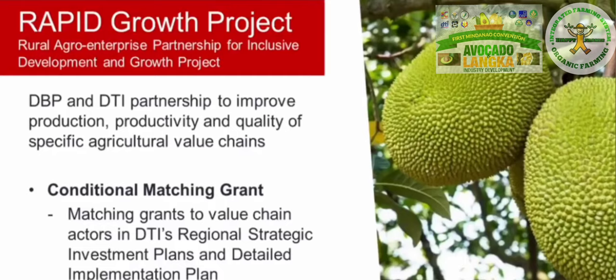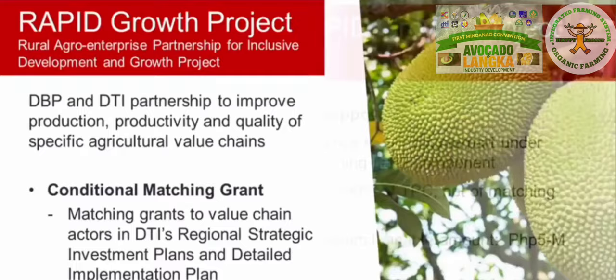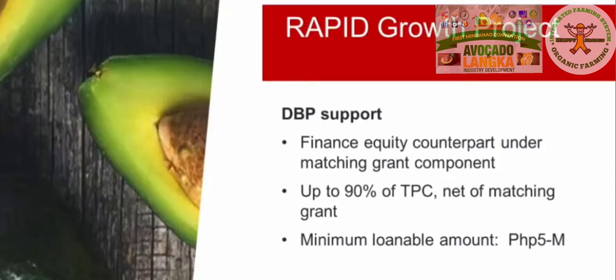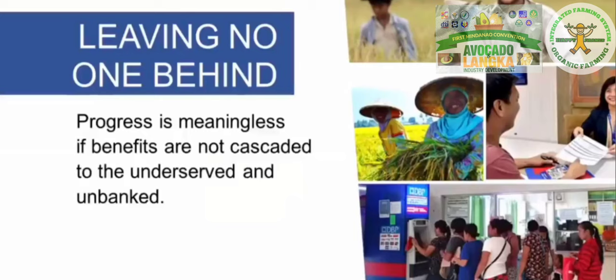Value chain actors entitled to receive matching grants are those identified and listed in the regional strategic investment plans and the detailed implementation plan of the DTI. DBP supports the RAPID Growth Project by financing the equity counterpart under the matching grant component. Eligible borrowers may be granted up to 90% of the total project cost net of the matching grant, with a minimum loanable amount of 5 million pesos.